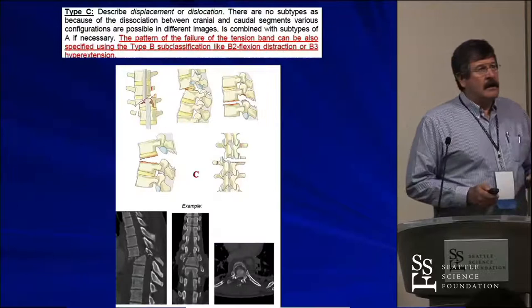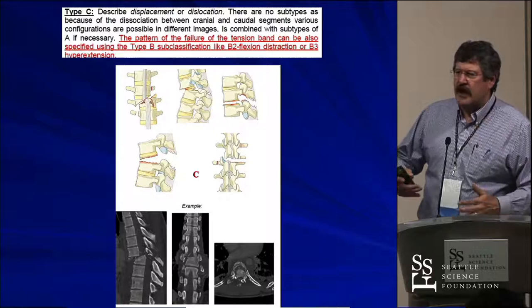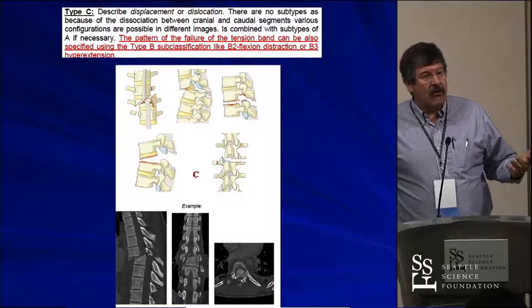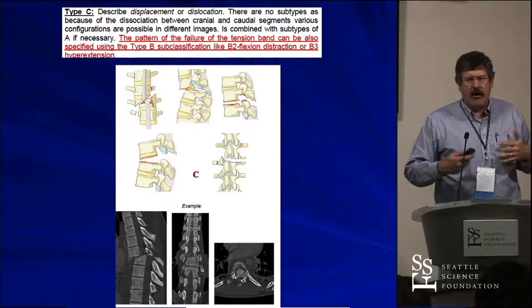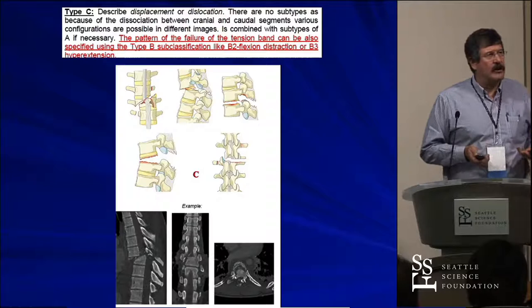For C injuries, they said there's only just C — we don't need to break it down. Once it's a fracture dislocation with translation, rotation, and instability, it makes no difference. They're all operative and the concepts of treating them are very similar. When you have a C injury, you can also grade the A injury. So you might have a C, A3 — because body comminution may play a role. Maybe you'll do it posteriorly but they need secondary anterior support.